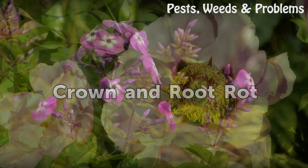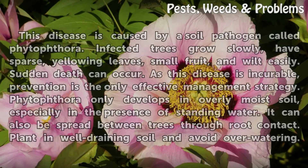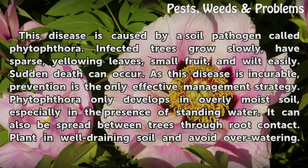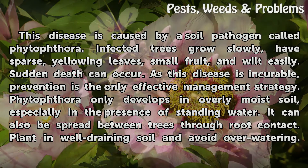Crown and Root Rot. This disease is caused by a soil pathogen called Phytophthora. Infected trees grow slowly, have sparse, yellowing leaves, small fruit, and wilt easily. Sudden death can occur. As this disease is incurable, prevention is the only effective management strategy. Phytophthora only develops in overly moist soil, especially in the presence of standing water.